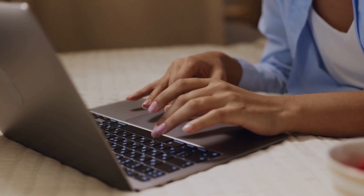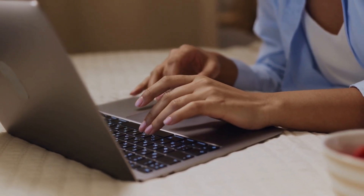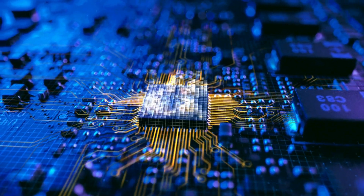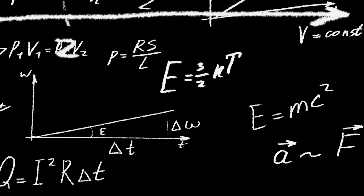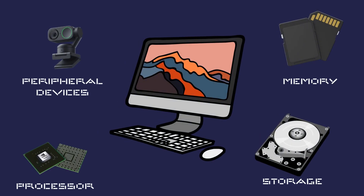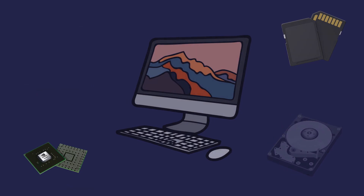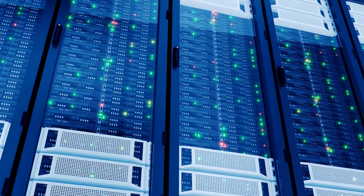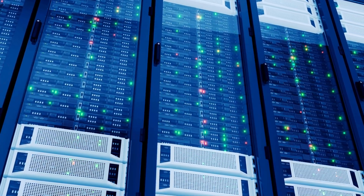A computer is an electronic device that helps us process information, perform calculations, and communicate with others. It consists of various components, including a processor, memory, storage, and peripheral devices. These parts work together to carry out tasks efficiently.